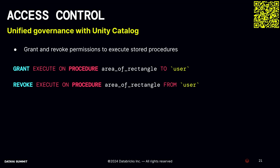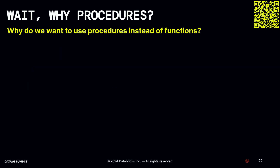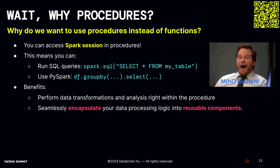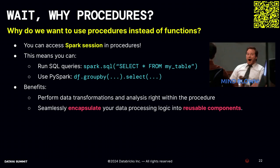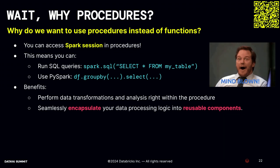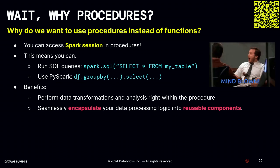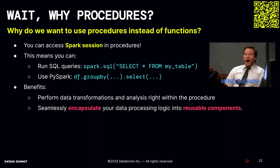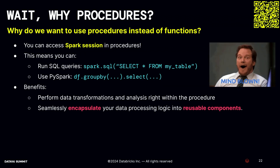Just like tables and functions, procedures are also secured by Unity Catalog, so you can easily manage who gets to call your procedures using the GRANT and REVOKE commands. You might be thinking: why do I need a procedure to calculate the area of a rectangle - why not just use functions? What really sets procedures apart and makes them incredibly powerful is the ability to access the Spark session inside the procedure. This means you can run SQL queries and use PySpark and Pandas on Spark API to perform any data transformations and analysis right within the procedure. You can encapsulate data processing logic into reusable components and invoke them on any user-enabled compute.